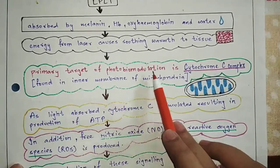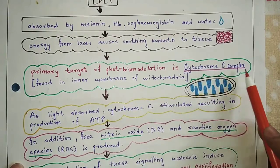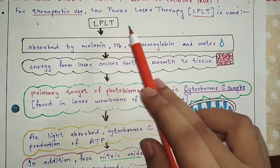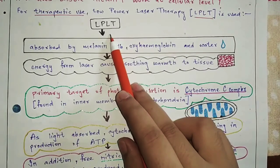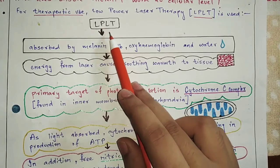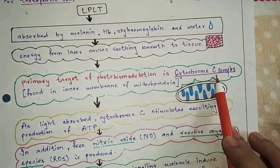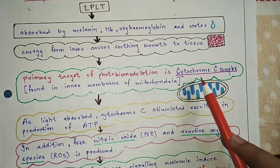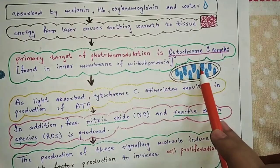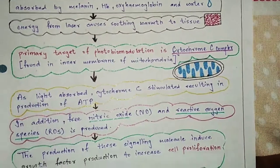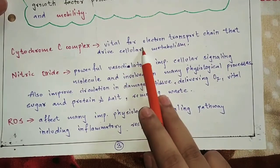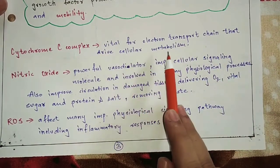The primary target of photobiomodulation is the cytochrome C complex. When we apply low power laser therapy and penetrate the skin, the main target is to increase ATP production. ATP production increases when the cytochrome C complex is stimulated. This cytochrome C complex is present in the inner membrane of the mitochondria. Cytochrome C plays a very vital role in the electron transport chain and it also drives cellular metabolism.